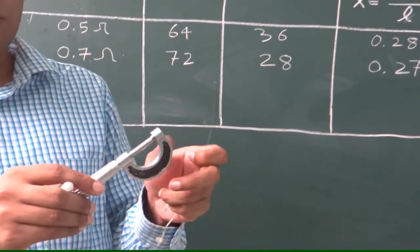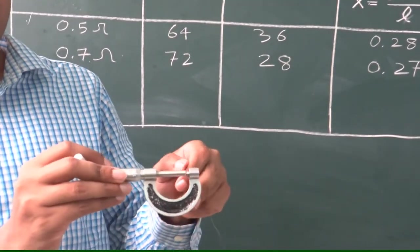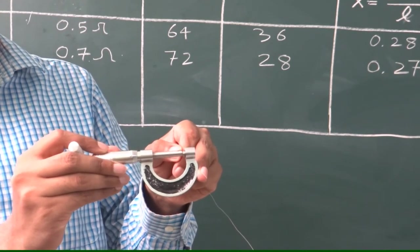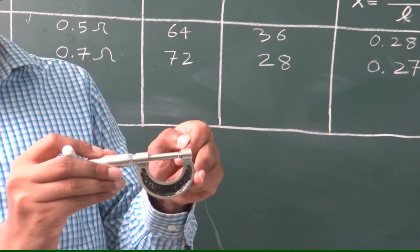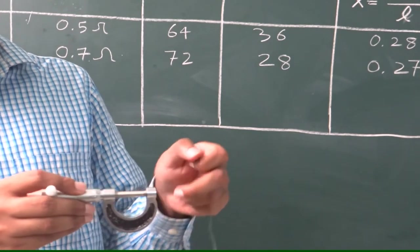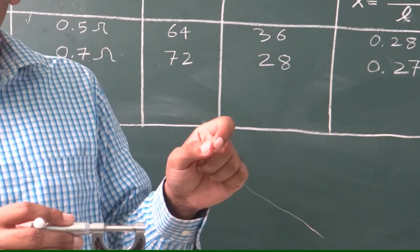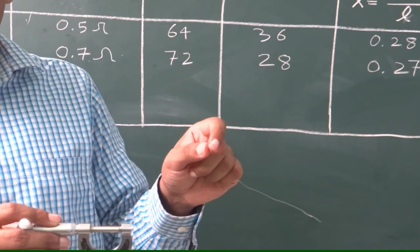Now use a screw gauge to determine the diameter of this wire. Take two readings and then as you know that the radius is half of the diameter, so you can determine the value of the radius of this.